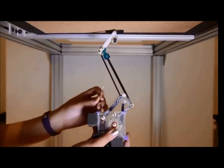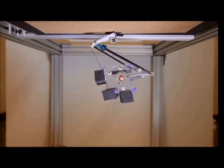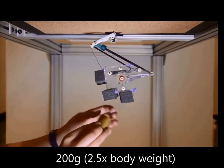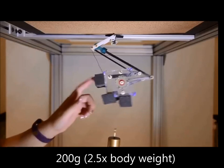First, we crouched the robot on a surface and used a latch to keep it crouched. Next, we hung weights on it. Here we are hanging 200 grams, which is two and a half times its body weight.